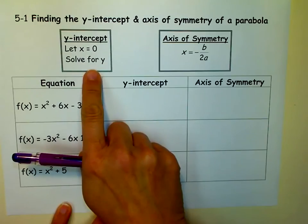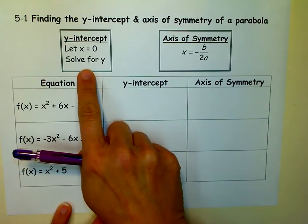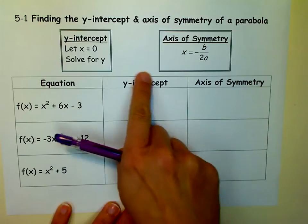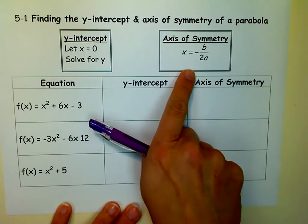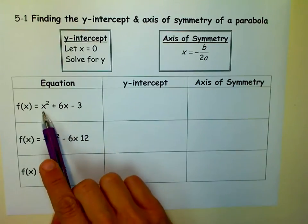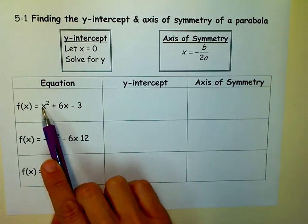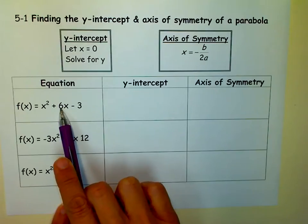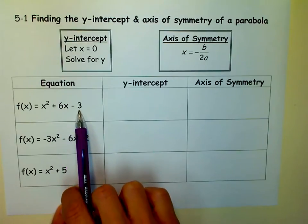Notice up here in our little box, it says how to find a y-intercept. We let x equal 0 and solve for y. And this is our formula for finding the axis of symmetry. Remember, the a is the coefficient in front of the x-squared, or the quadratic term. The b is the coefficient in front of the x-term, and the c is the constant.